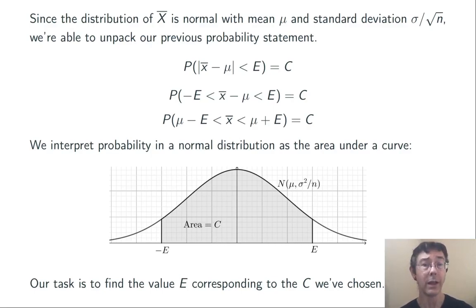So we need to find values of E, E on the right, negative E on the left, that are going to give us that area C under that normal distribution curve.